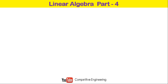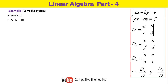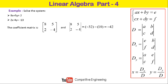We will explain this with an example. We have two linear equations: 8x + 5y = 2 and 2x − 4y = −10. The coefficient matrix is [8 5; 2 −4]. The determinant D equals (8)(−4) − (5)(2) = −32 − 10 = −42. For finding x, we compute Dx by replacing the first column with [2; −10], and for y we compute Dy by replacing the second column with [2; −10].